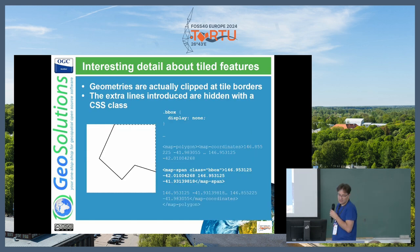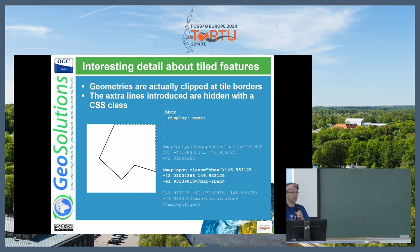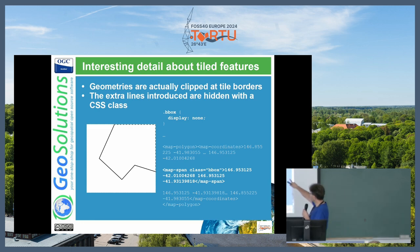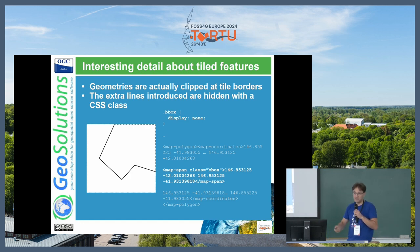There's an interesting detail about tile features: how do we hide the extra sides that you generate when clipping? In vector tiles, you typically have a buffer or gutter around the tile, and the extra generated sides induced by the clipping are just outside the view of the tile — they are there but not rendered. In the case of MapML, the specification is slightly different: we keep everything inside the tile, but tag a subset of the coordinates with a special class that makes them invisible. It's a CSS trick to set visibility to false, so they are not displayed by the client.